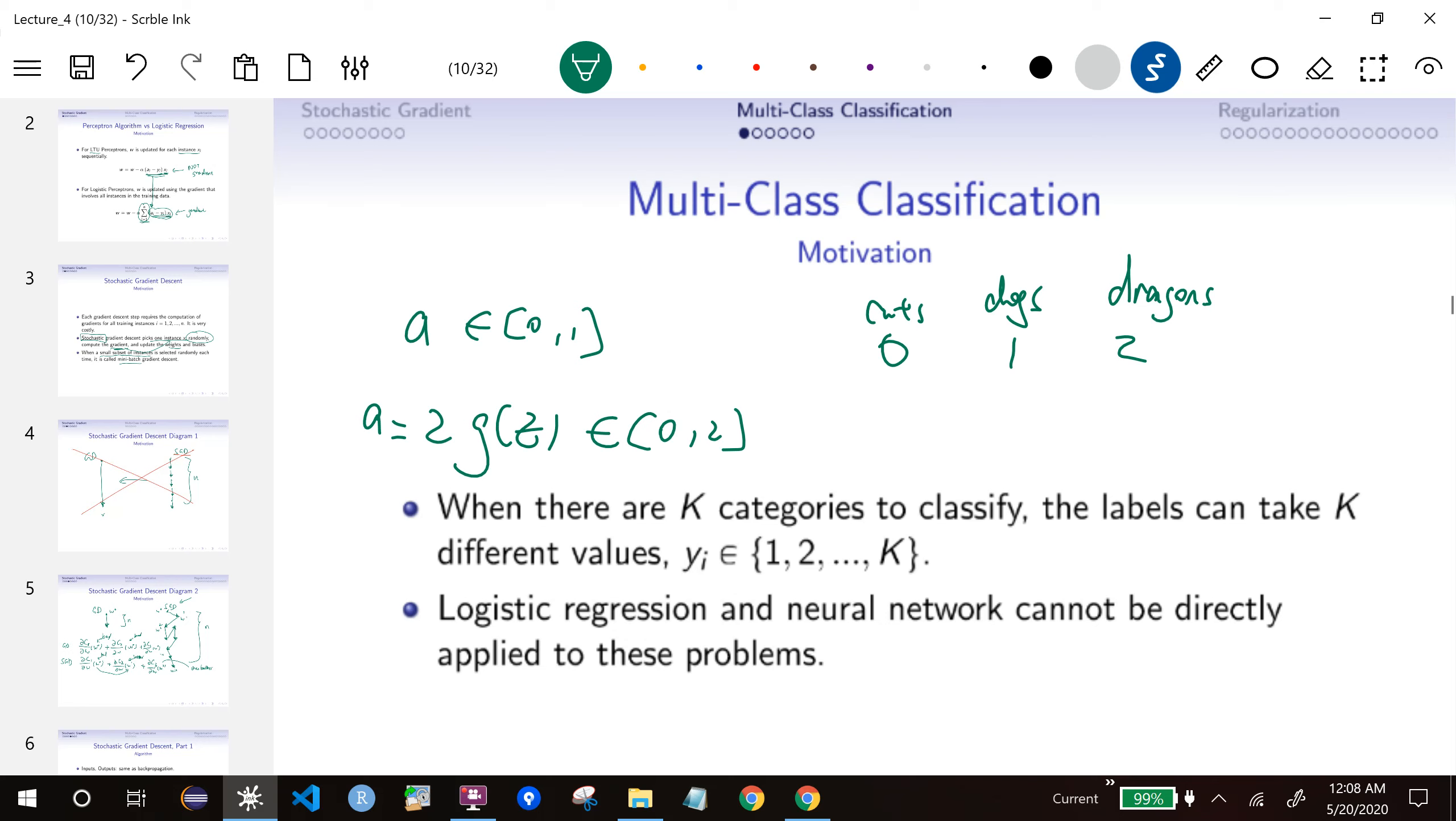The problem is, they are not ordered this way. If you think this way, then dragons, you are thinking dragons are actually cats that are more dog. So if you get kind of increasing dogness, it becomes a dragon. That's not the case. They are not actually ordered in any particular way. So using the number 0, 1, 2 doesn't make any sense for multi-class classification.